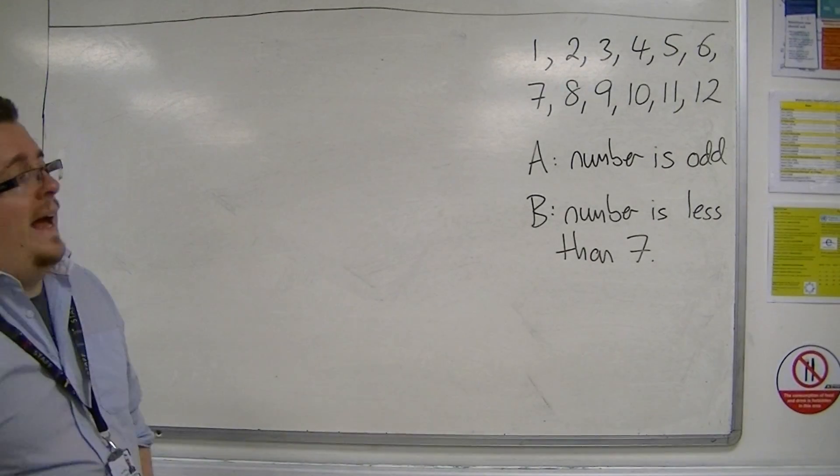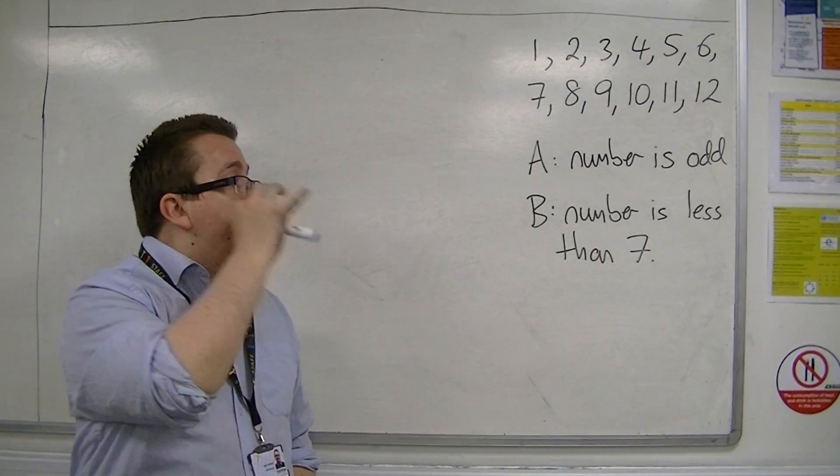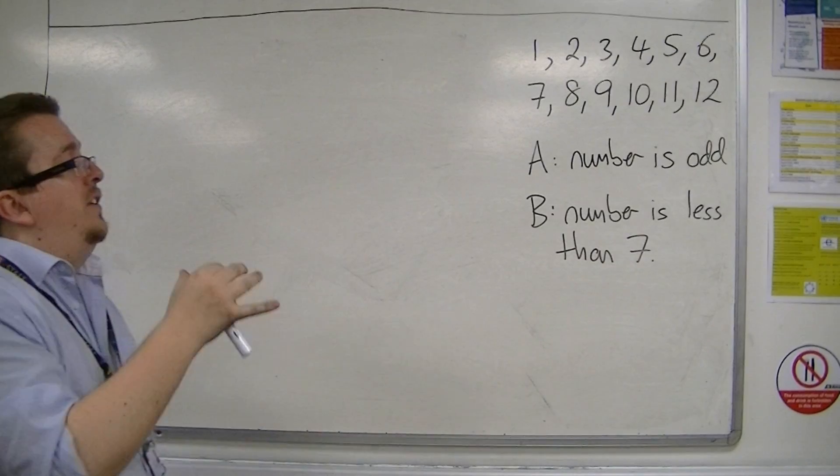So let's say we've got the numbers 1 to 12, and we've got event A is the number is odd, and event B is the number is less than 7.